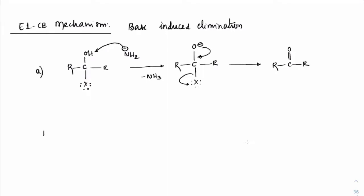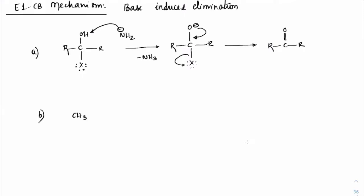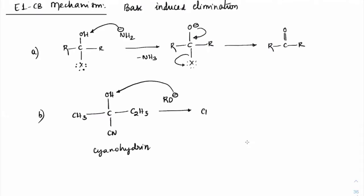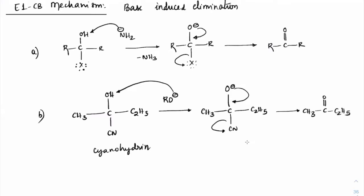Another example: CH₃–C(OH)(CN)–C₂H₅ is a cyanohydrin. Treating with RO⁻ extracts the OH proton to give CH₃–C(O⁻)(CN)–C₂H₅. Then O⁻ closes as C=O and CN⁻ leaves, giving CH₃C(=O)–C₂H₅. These are all base-induced elimination reactions.